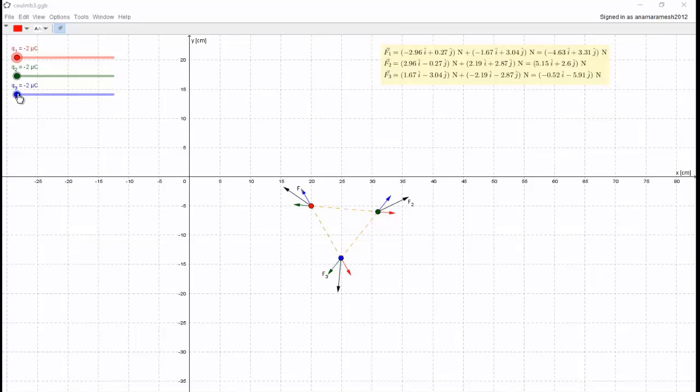Through this dynamic graph we can see the vector addition of forces acting on the charges. The force acting on a point charge due to a system of point charges is the vector sum of the individual forces acting alone on that point charge due to each of the other charges.